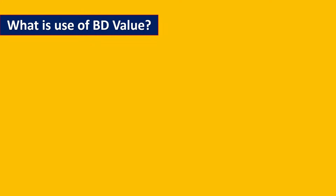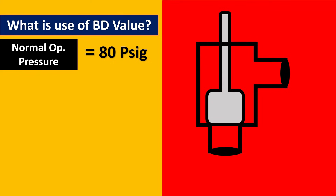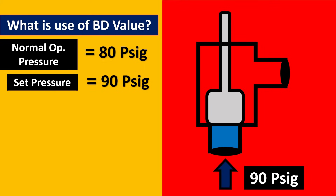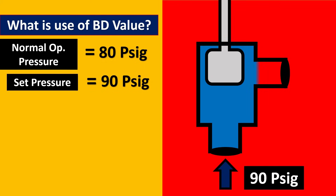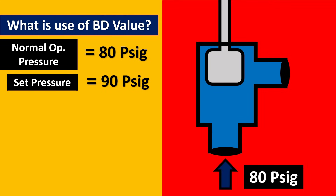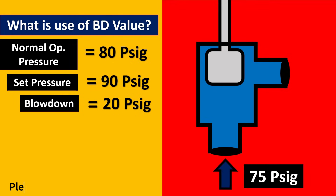This is extremely important, and a valve can be technically non-acceptable if you don't have proper BD values. Imagine your normal operating pressure is 80 PSIG — the valve will not open. Your set pressure is 90 PSIG, so the relief valve opens and relieves all fluid from its outlet. Now as the pressure reduces back to 80 PSIG, the relief valve should close, but it will not. Even reducing it to 75 PSIG, the relief valve is still not closing — this is very dangerous.